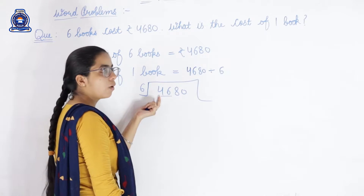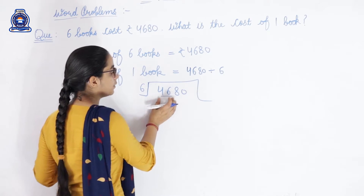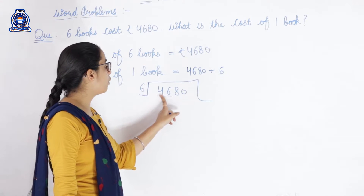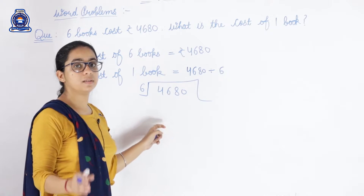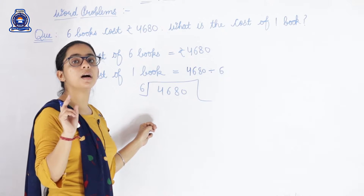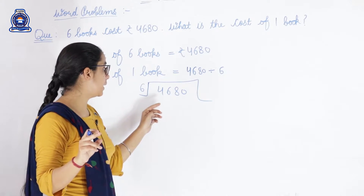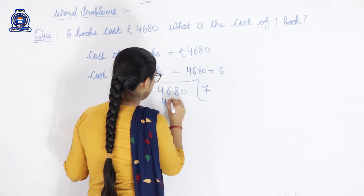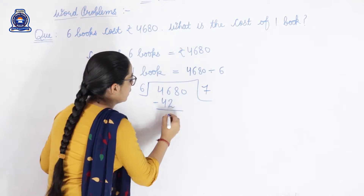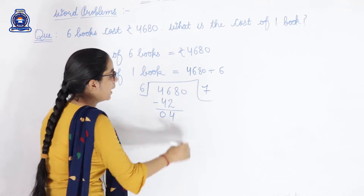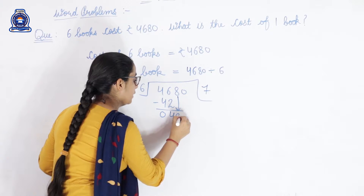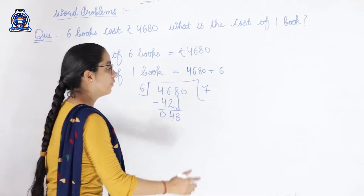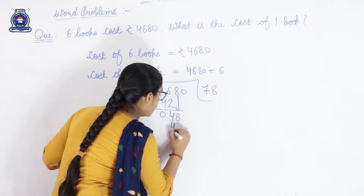First we consider forty-six, because four is smaller than six. We recite the table of six and look for the number smaller than or equal to forty-six. Six sixes are thirty-six, six sevens are forty-two, six eights are forty-eight. So forty-eight is too big. Six sevens are forty-two. We subtract: forty-six minus forty-two gives four. Next we carry down eight, making forty-eight. Six eights are forty-eight.